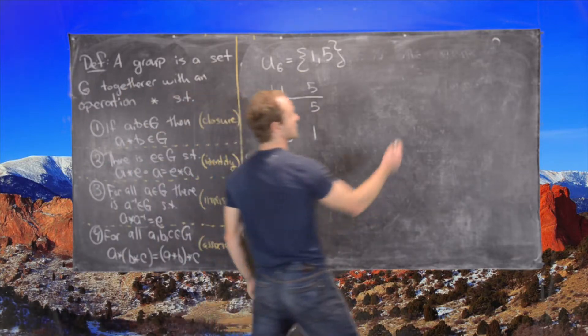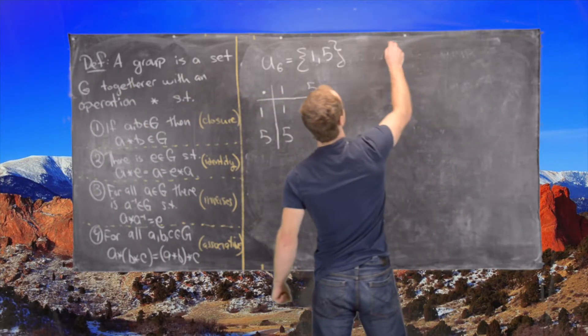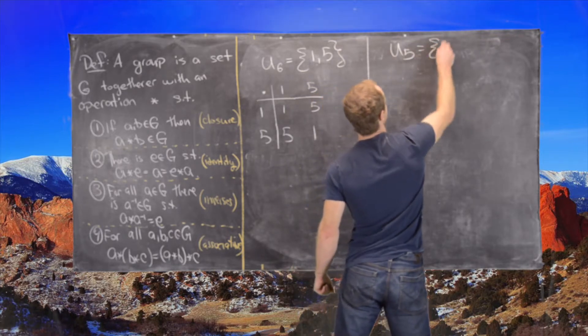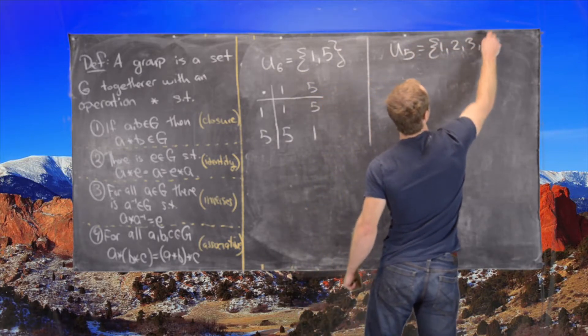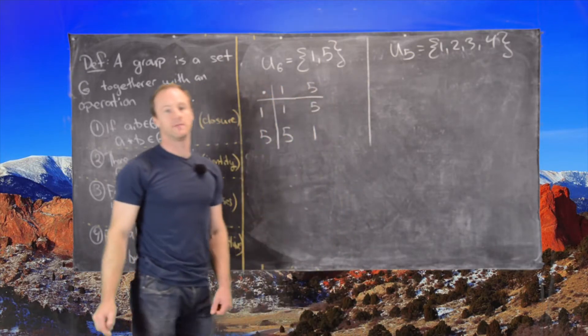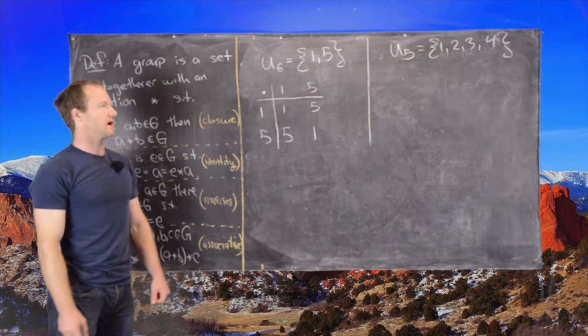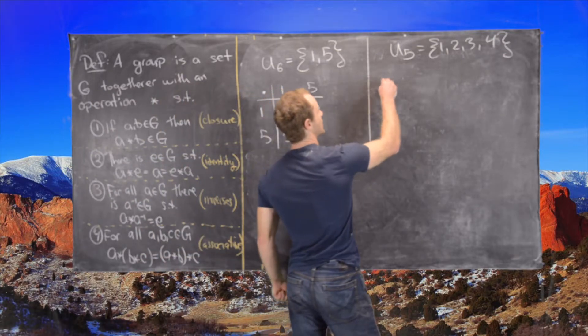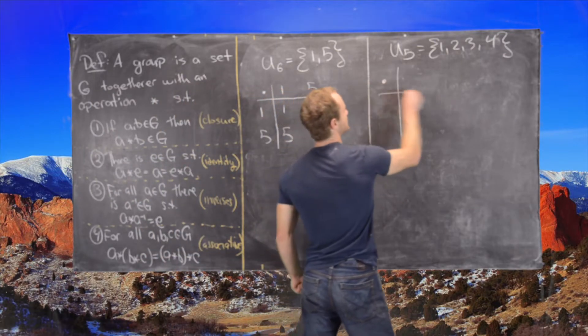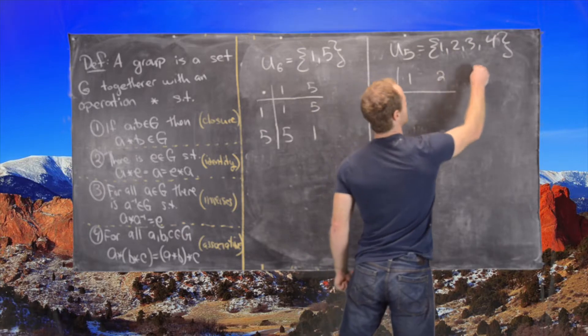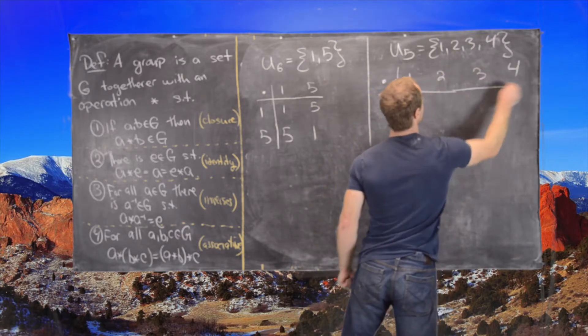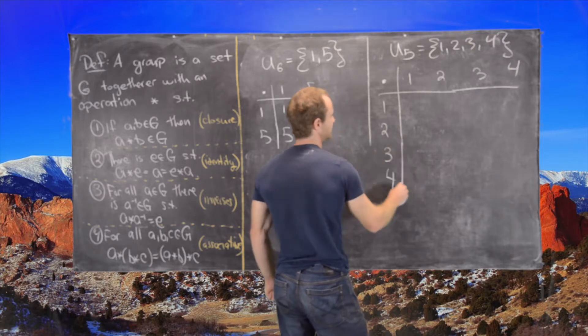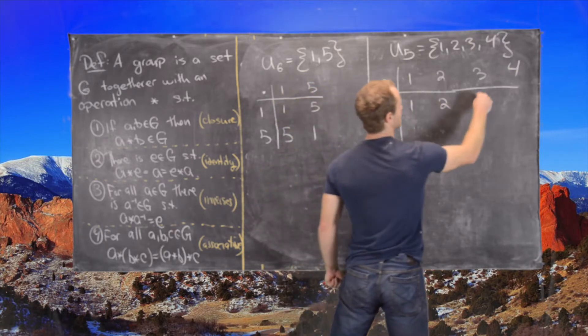Let's look at another one, U5. That'll be the numbers 1, 2, 3, and 4. Since 5 is prime, we get every number smaller than 5 except for 0. Again we'll make a multiplication table with 1, 2, 3, 4 on both axes. Let's do all of the multiplications.